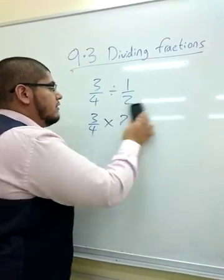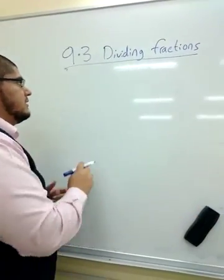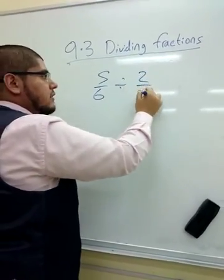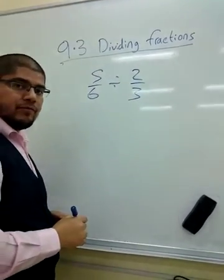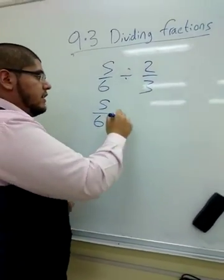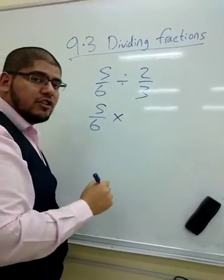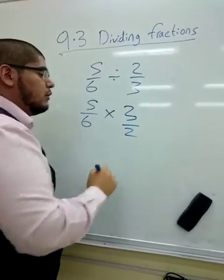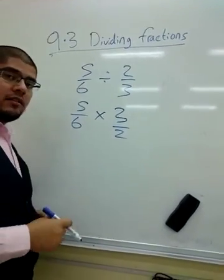Let's do another example. Let's say we have 5 over 6 divided by 2 over 3. Keep 5 over 6 the same. Now write and multiply and change the second fraction upside down, which is 3 over 2. So this is the reciprocal.